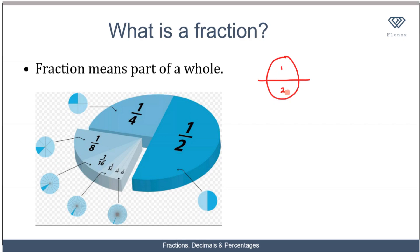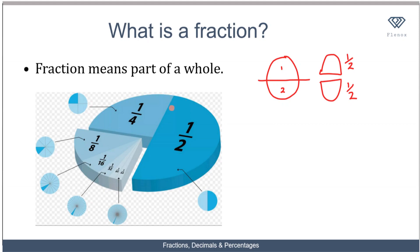You take one of the parts and your sibling takes the other part, so you've taken one out of the two parts. This is basically what a fraction is. If you look at a circle divided into two, you can see that each section represents half.